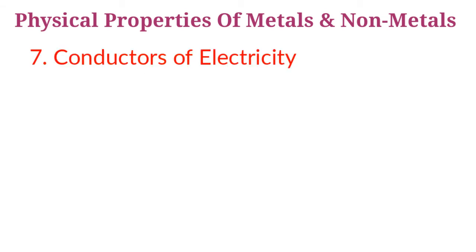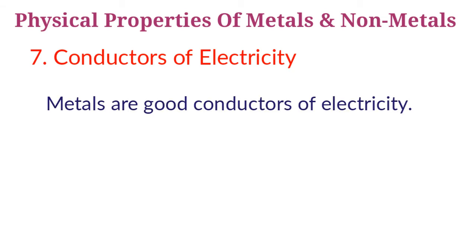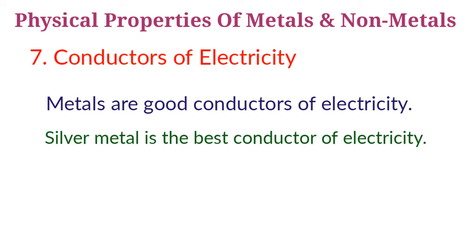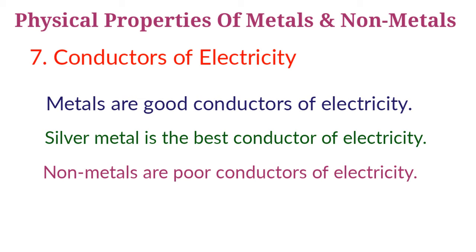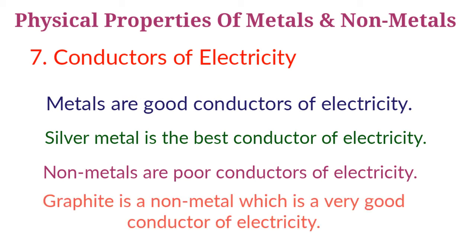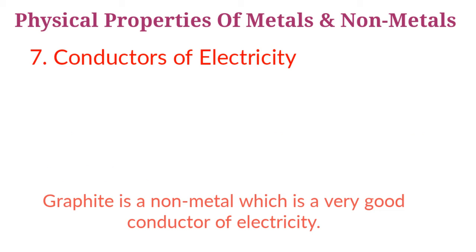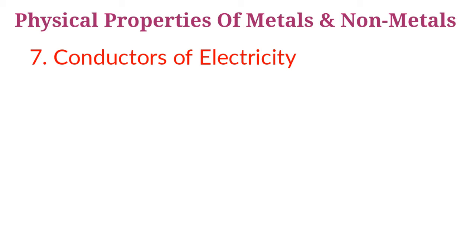Next property: conductors of electricity. All metals are good conductors of electricity. Silver metal is the best conductor of electricity. Copper wires are used in household electric wiring and aluminium wires are used in electric cables, because copper and aluminium are good conductors of electricity. Non-metals are poor conductors of electricity. For example, sulfur and phosphorus do not conduct electricity. However, graphite is the non-metal which is a very good conductor of electricity. We can do an activity to show that metals are good conductors and non-metals are poor conductors of electricity.